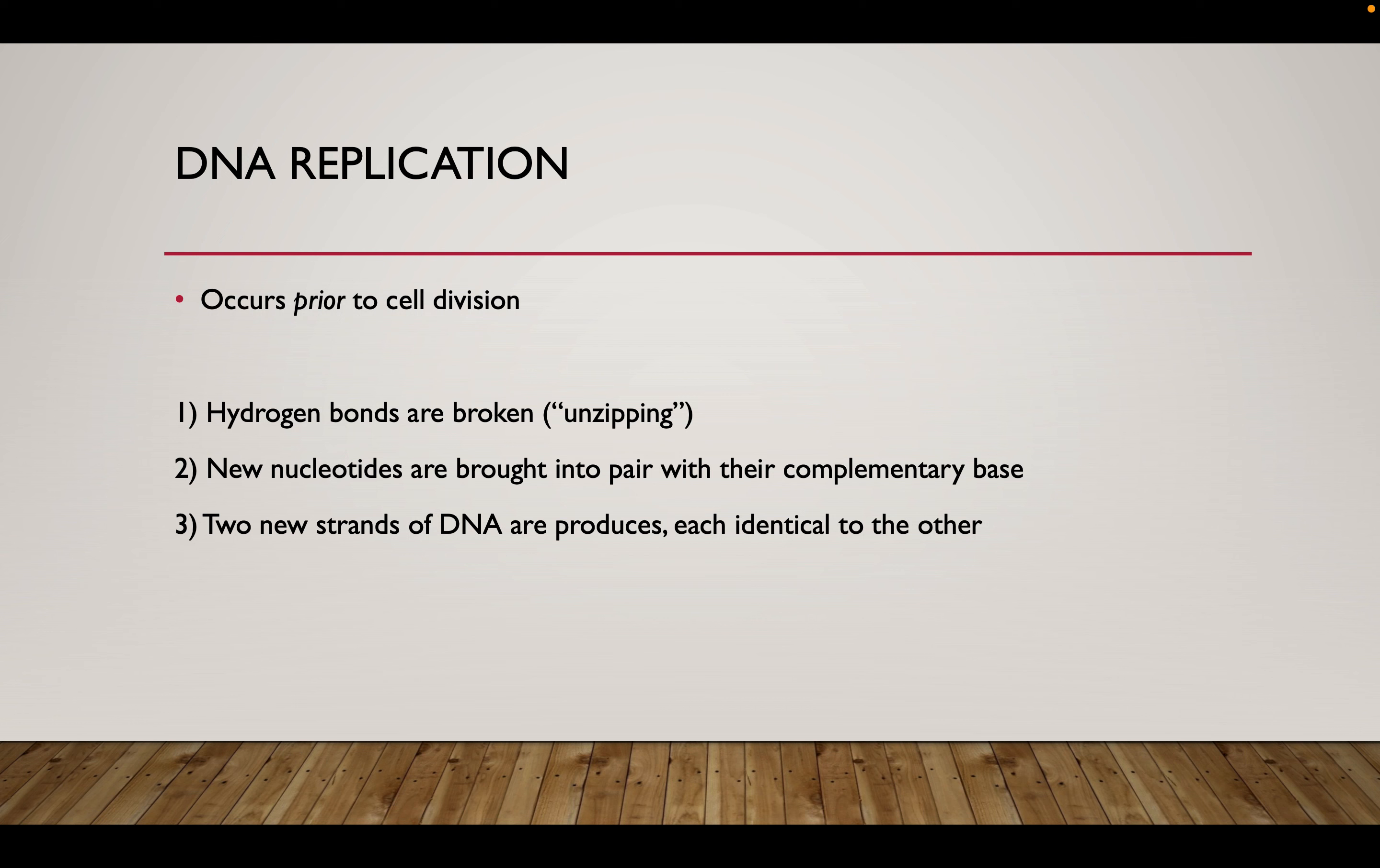You then have an enzyme called DNA polymerase come in. DNA polymerase begins to lay down new nitrogenous bases. So if there's a T, it'll put in an A, C a G, G a C, T and A, A a T, A a T, and you continue this process until you have completely replicated the whole strand.